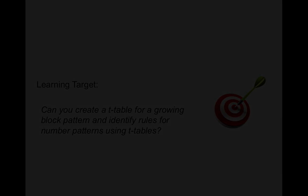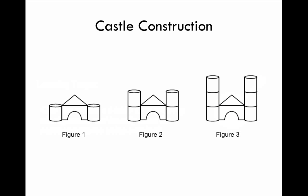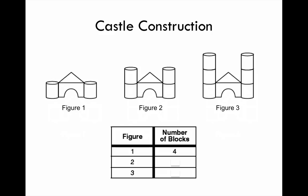Everyone likes to play with blocks. The pictures here show several stages in the construction of a castle made out of blocks. Imagine that we need to keep track of the number of blocks used in each stage of the construction. A simple way to do this is to make a table called a t-table. Notice how the central part of the chart resembles a T — that's how it got its name.